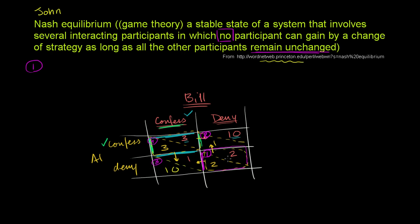In state one, Al is denying and Bill is denying. Al can improve his situation by changing his strategy — going from denying to confessing. Or, going the other way: if we're sitting in state four and we assume Al is constant, Bill can improve his situation by going from denial to confession, going from two years to one year. I've given two examples in which a participant can gain by a change of strategy while the other participant remains unchanged — so state one is not a Nash equilibrium.